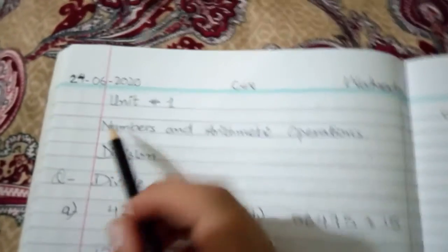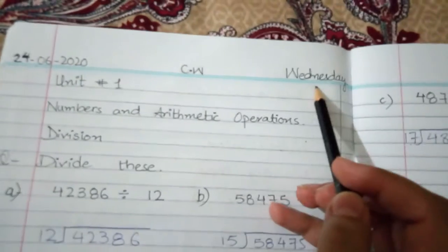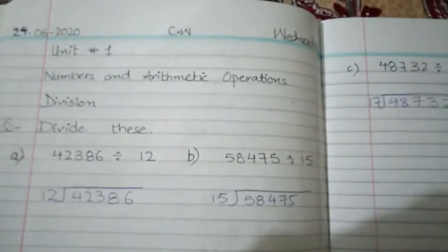So let's take out the notebook. You will write the date: 24-6-2020, Classwork, Wednesday. Then draw a margin line on the two pages.